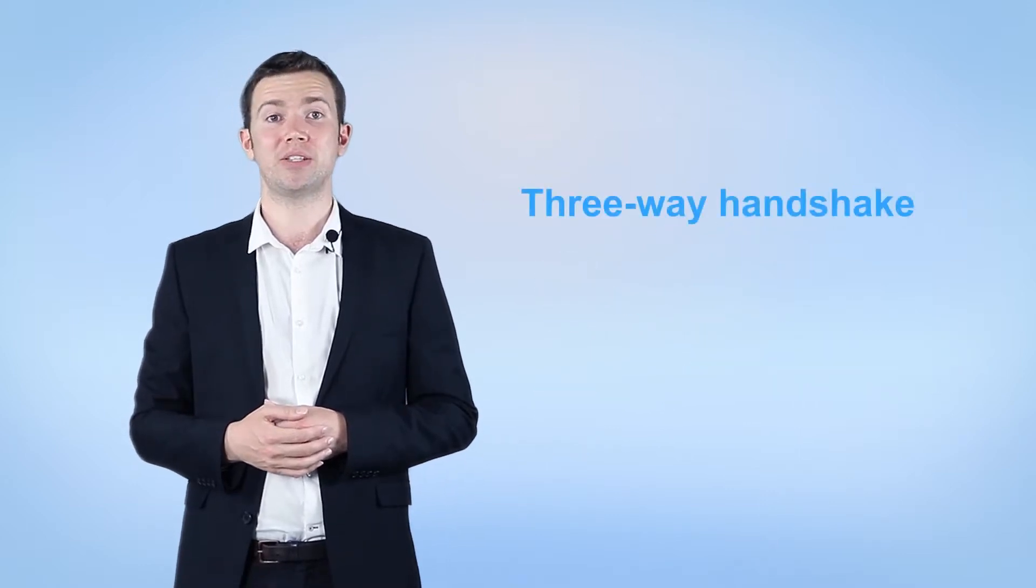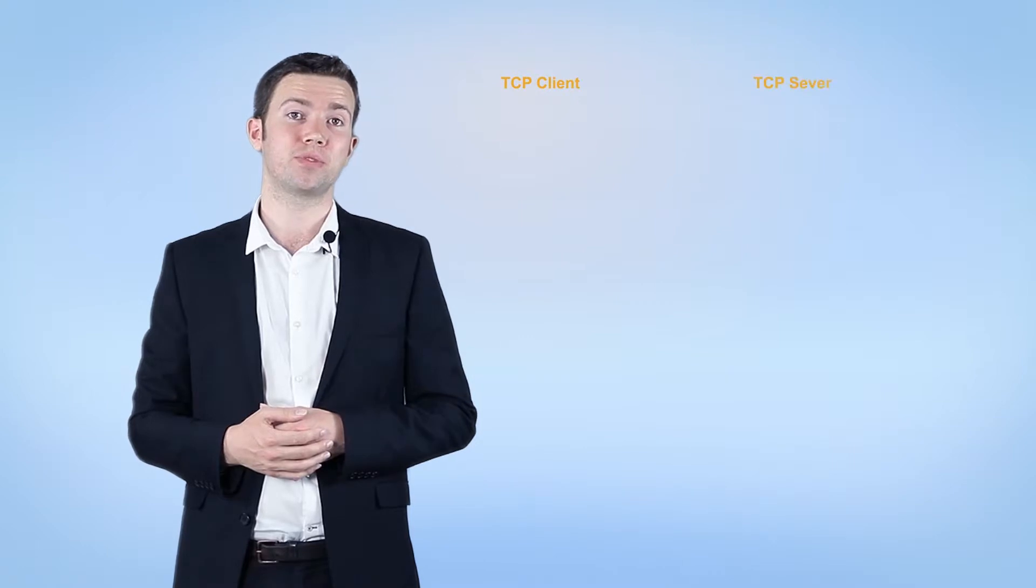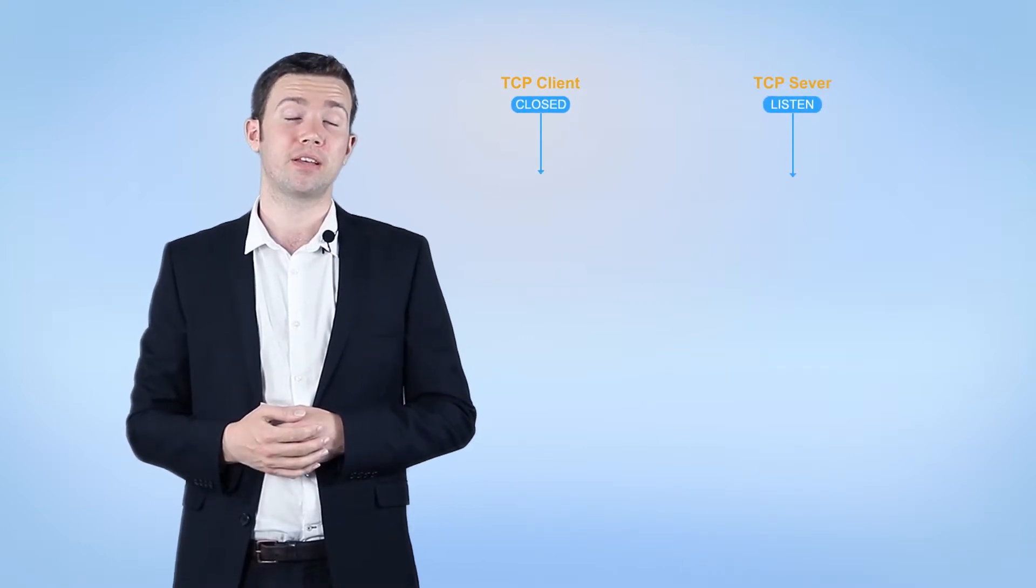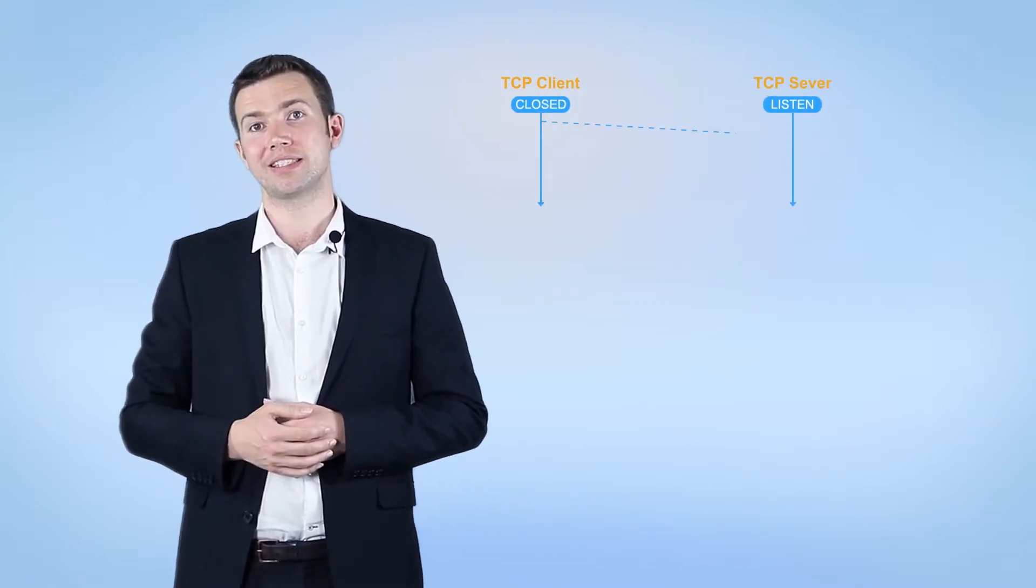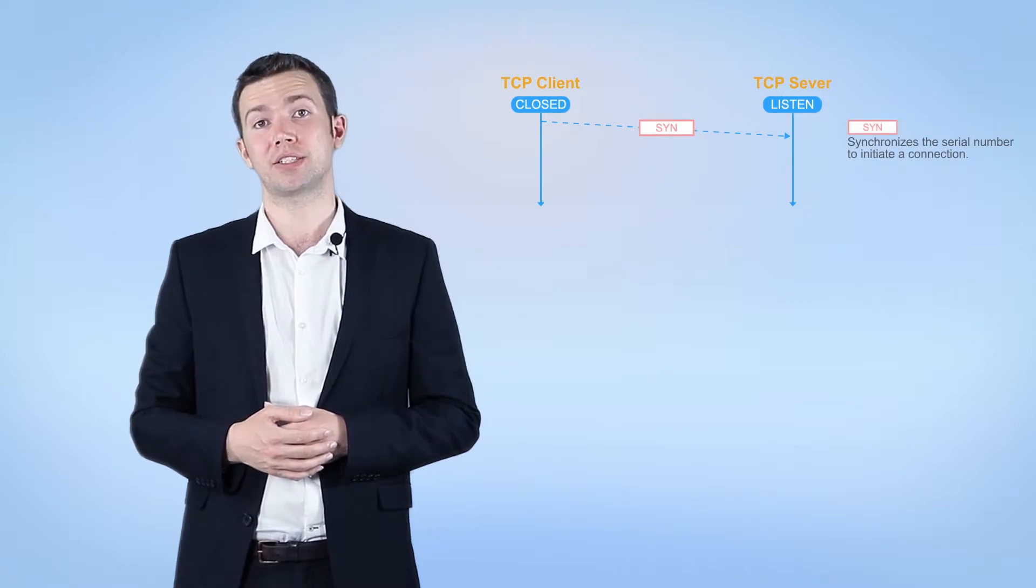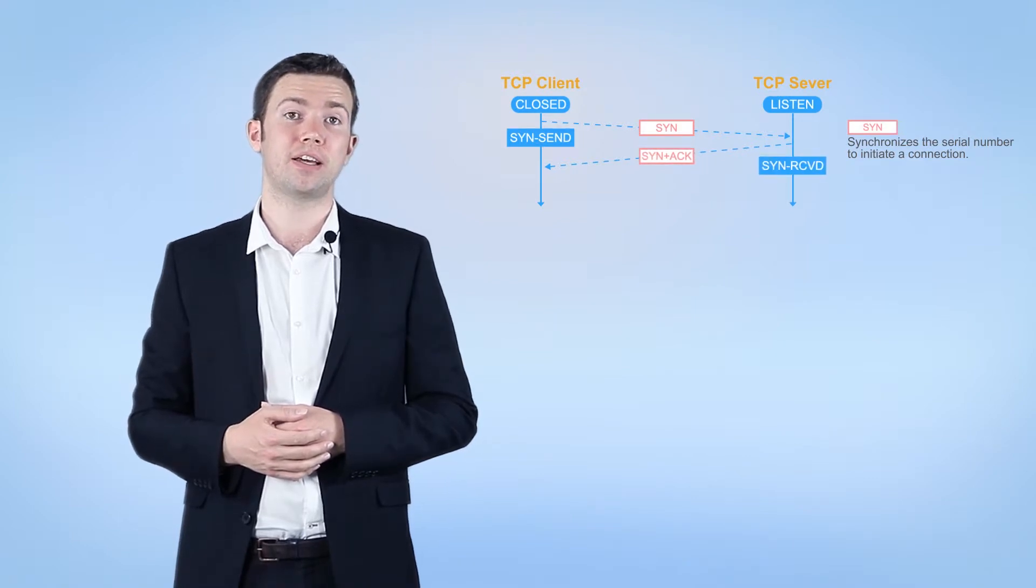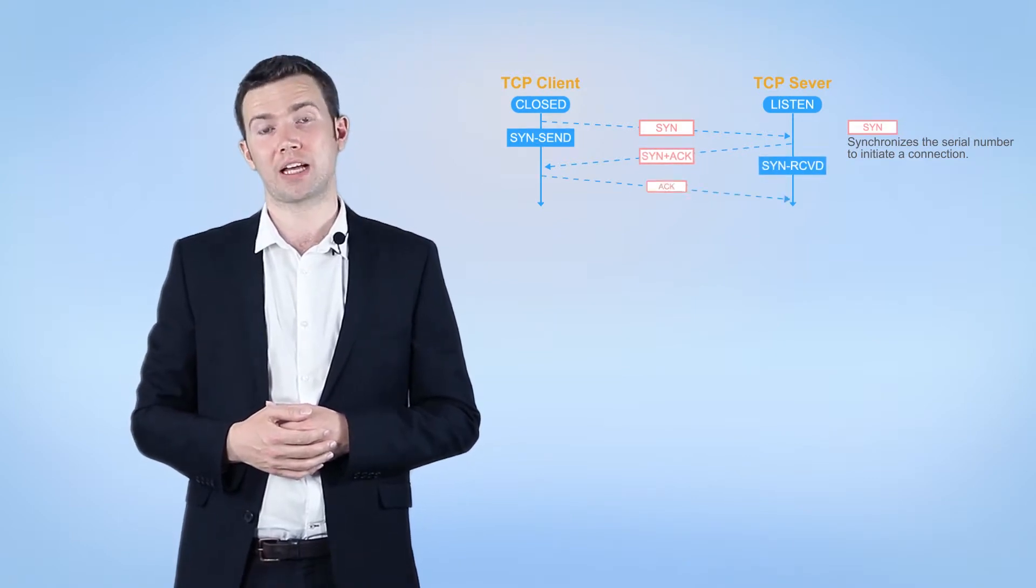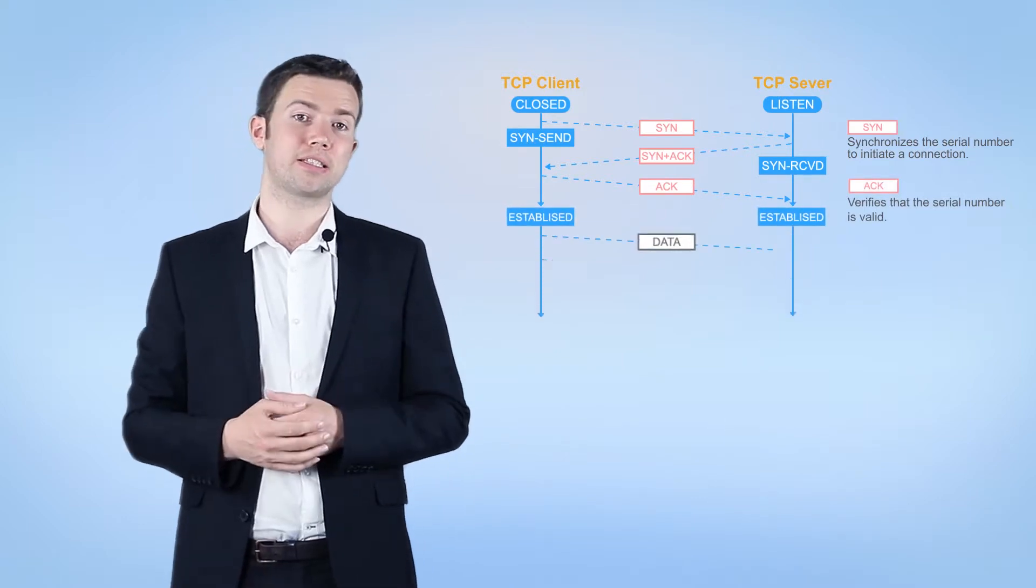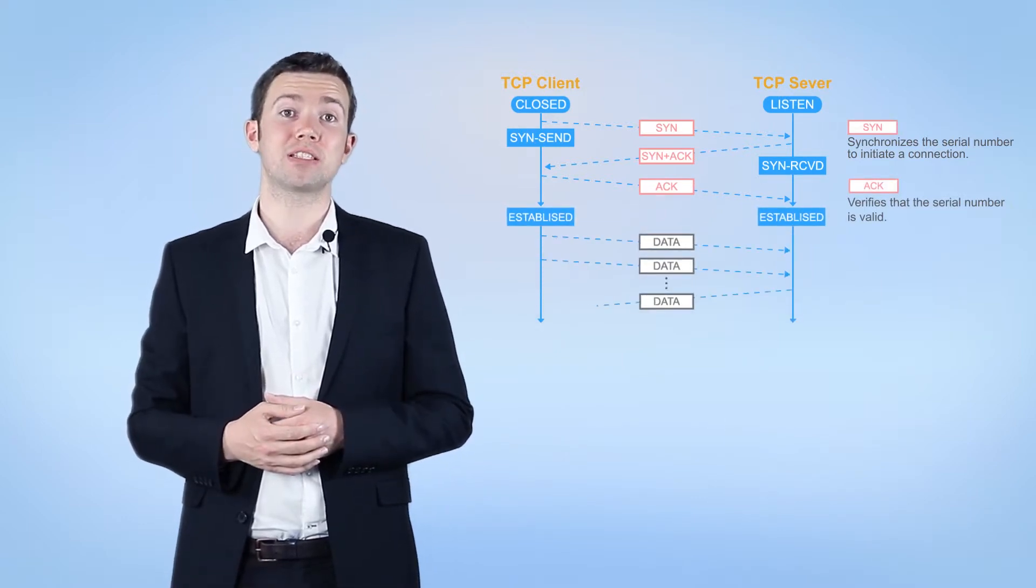TCP uses the widely known three-way handshake mechanism to set up a connection. Firstly, the client sends a SYN packet to initiate a connection. Then, the server replies with a SYN plus ACK packet. Finally, the client replies with an ACK packet. After the connection is set up, data can be transmitted.